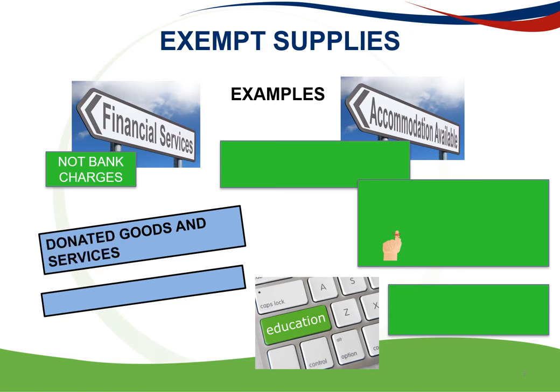The next example is donated goods and services. The supply of donated goods and services by an association not for gain is exempt. The supply of residential accommodation is also exempt. This implies, for example, that the supply of a house or flat to another person who, in terms of a rental agreement, uses the house or flat mainly for residential purposes is exempt from VAT.